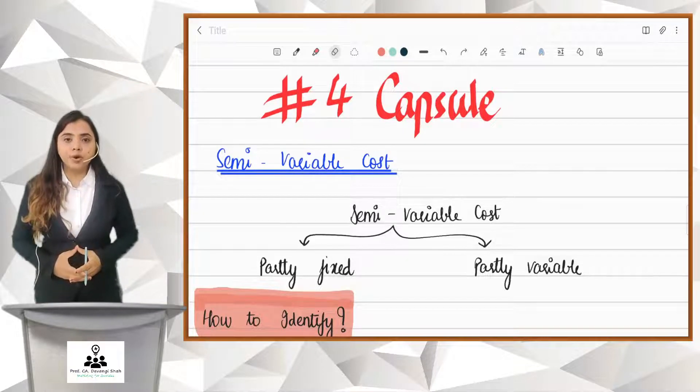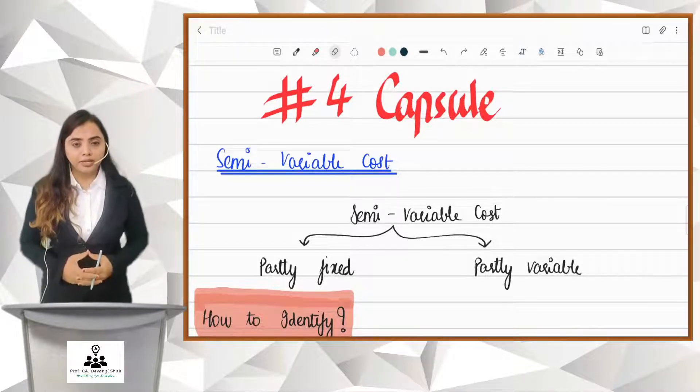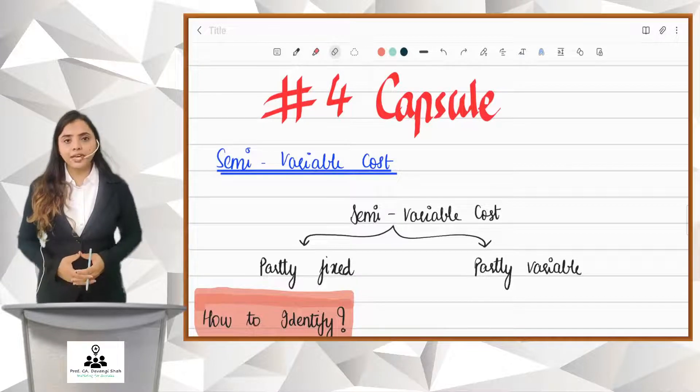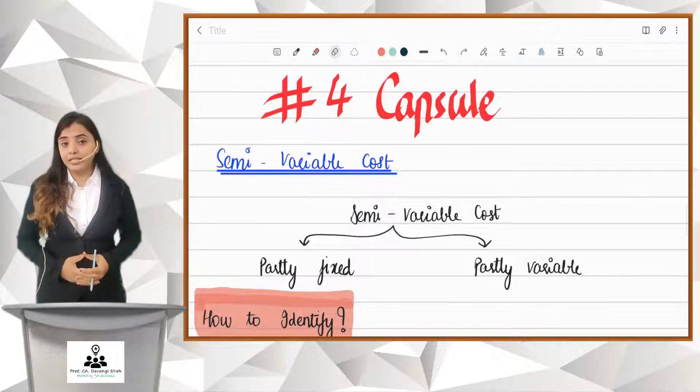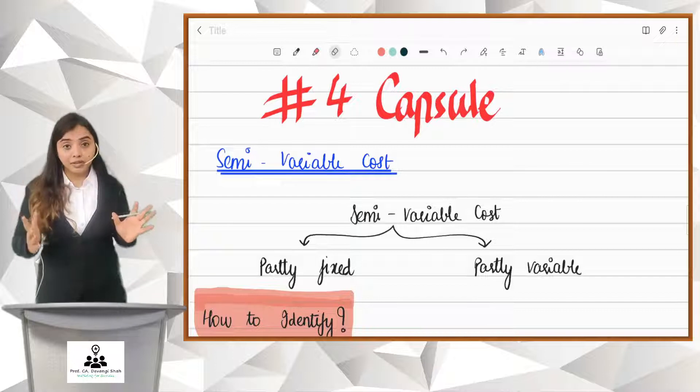Friends, costing capsule number 4 is for semi-variable cost. You have studied classification of cost based on behavior where we classify the cost into variable, fixed and semi-variable. So, this is the third one.